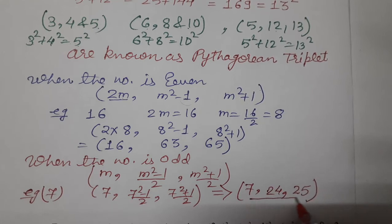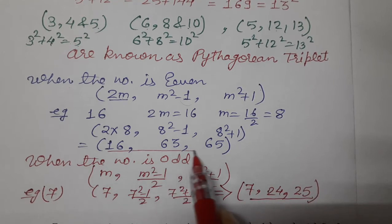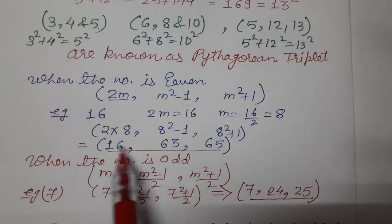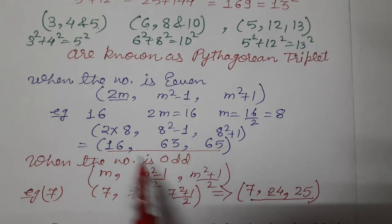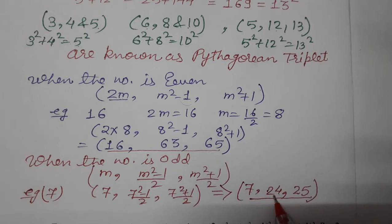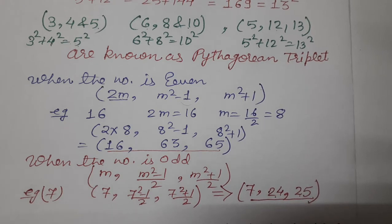So this is again one more Pythagorean triplet. 7 square plus 24 square equals to 25 square. So I hope children that you are clear, what is Pythagorean triplet, how we can find out, and how it is based on the Pythagoras property we studied in previous class 7th. Thank you so much for watching the video.